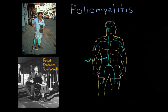His muscles in his right leg have atrophied — in other words, they've lost their muscle tone and shriveled up, because without any input from the motor neurons, they just shrivel up.